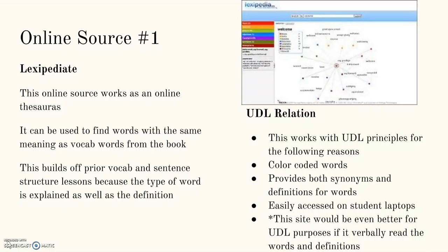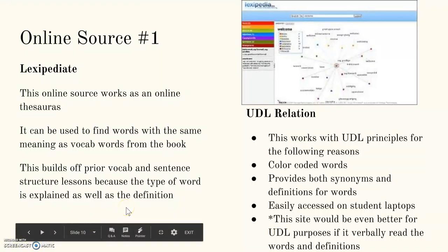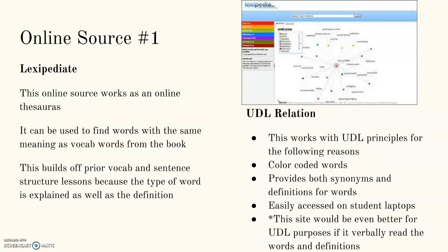The first source I have is Lexipedia. This online source works as an online thesaurus. It can be used to find words with the same meaning as vocabulary words from the book, and it builds off prior vocabulary and sentence structure because the type of word is explained as well as the definition. The UDL relationship is that it has color-coded words which helps you know what part of the sentence something is — whether it's an adjective, a verb, and so on. It provides synonyms and definitions to help explain words and is easily accessed on laptops. The only problem is that it doesn't have any audible component, so without audio it's missing students who might have difficulty with reading or writing. Beyond that, it's a good way for students to have a visual alongside explanation, with a spidery map they can hover over to navigate easily.